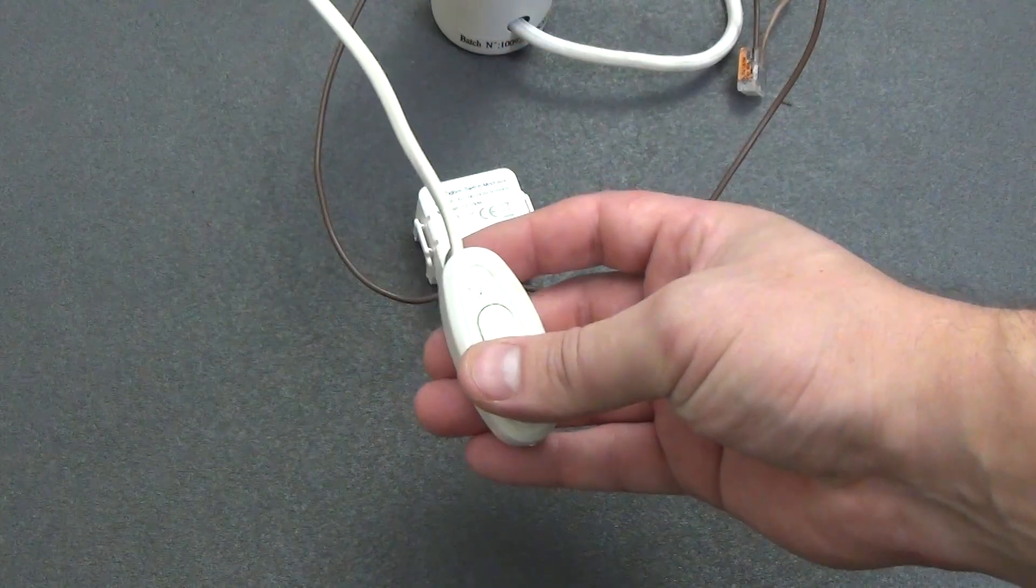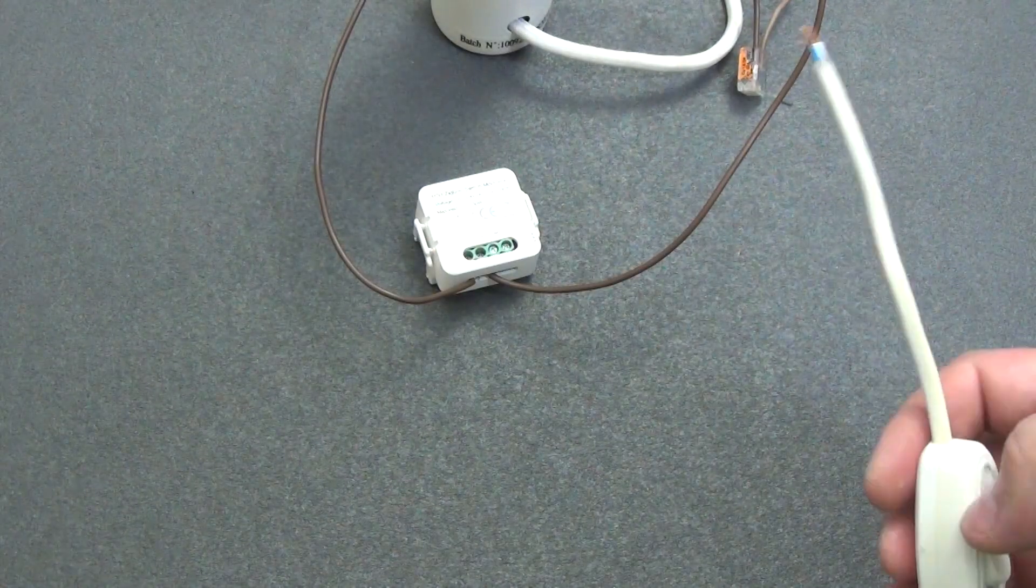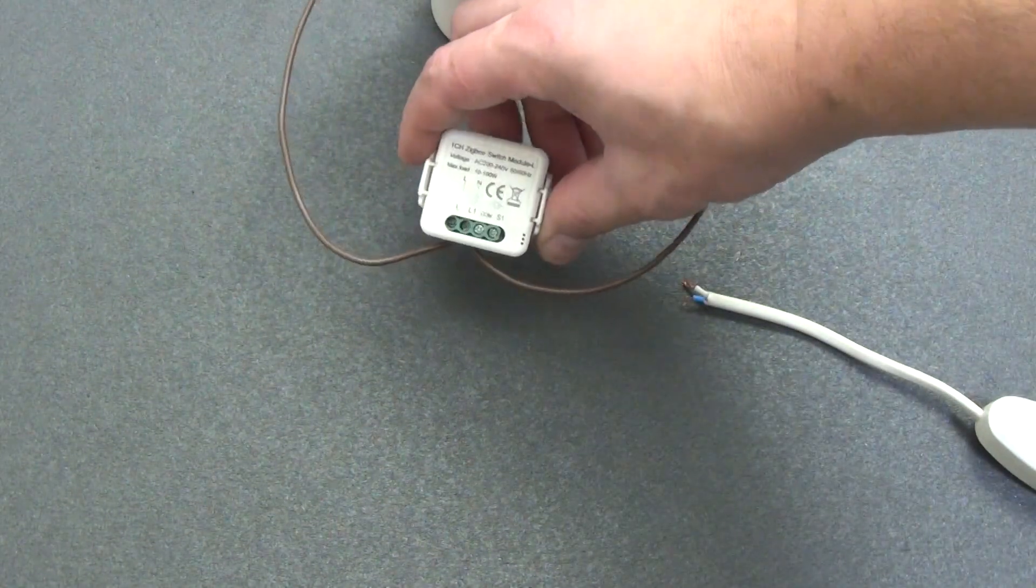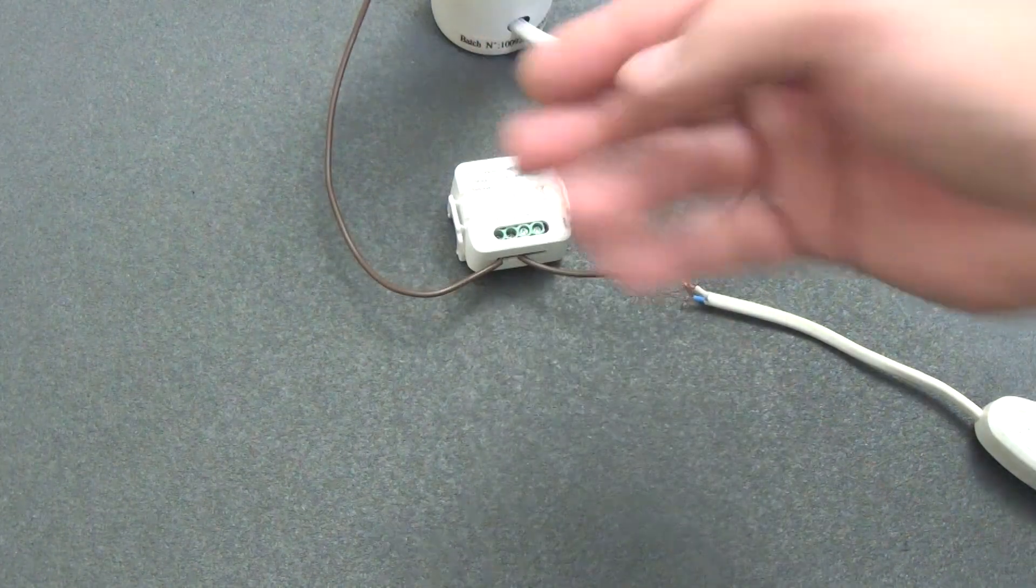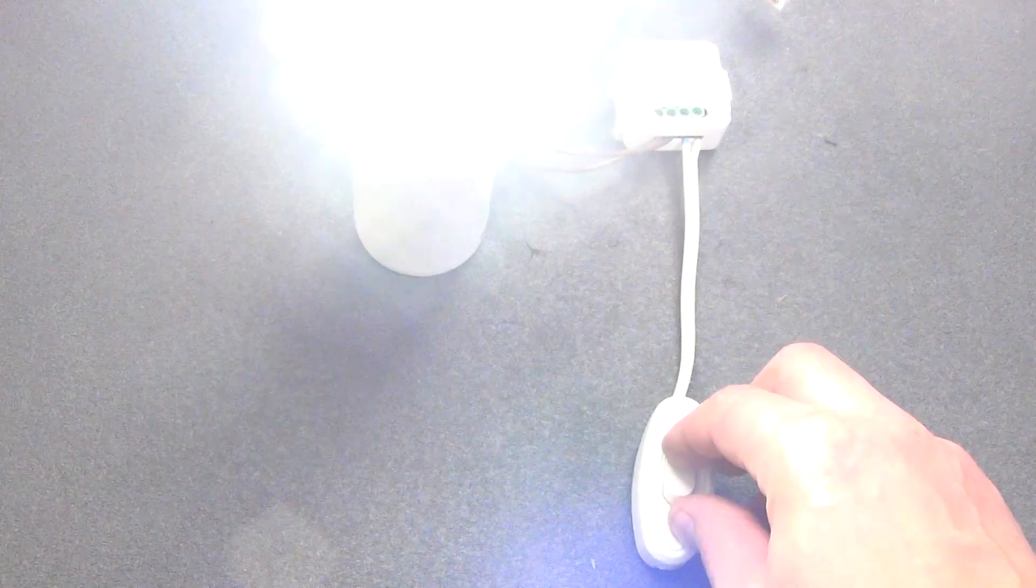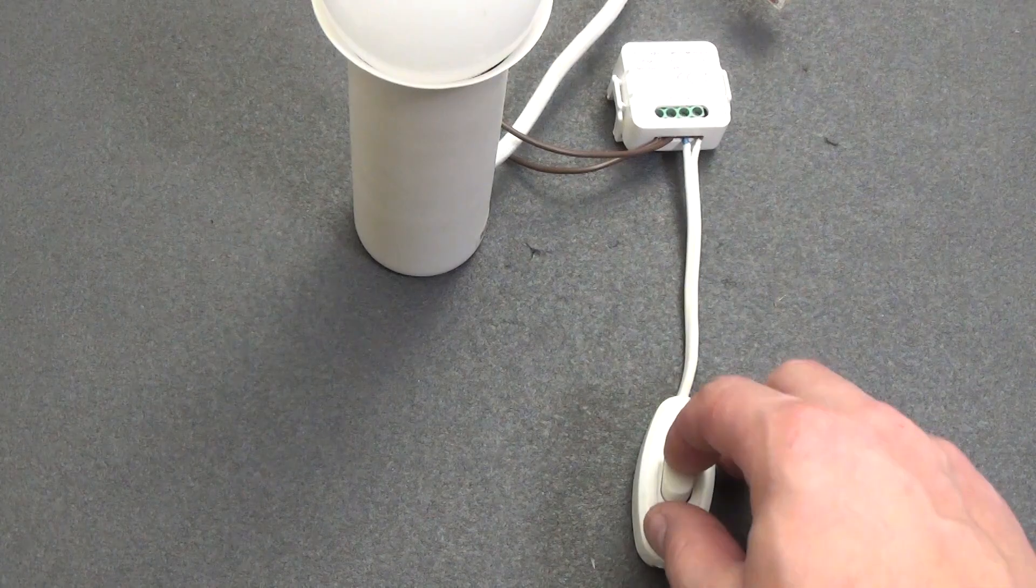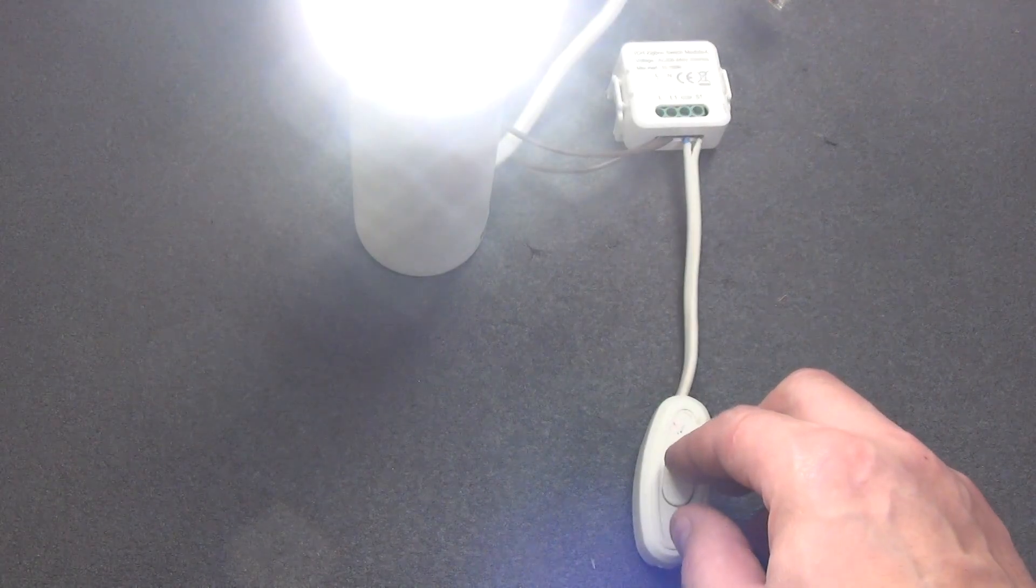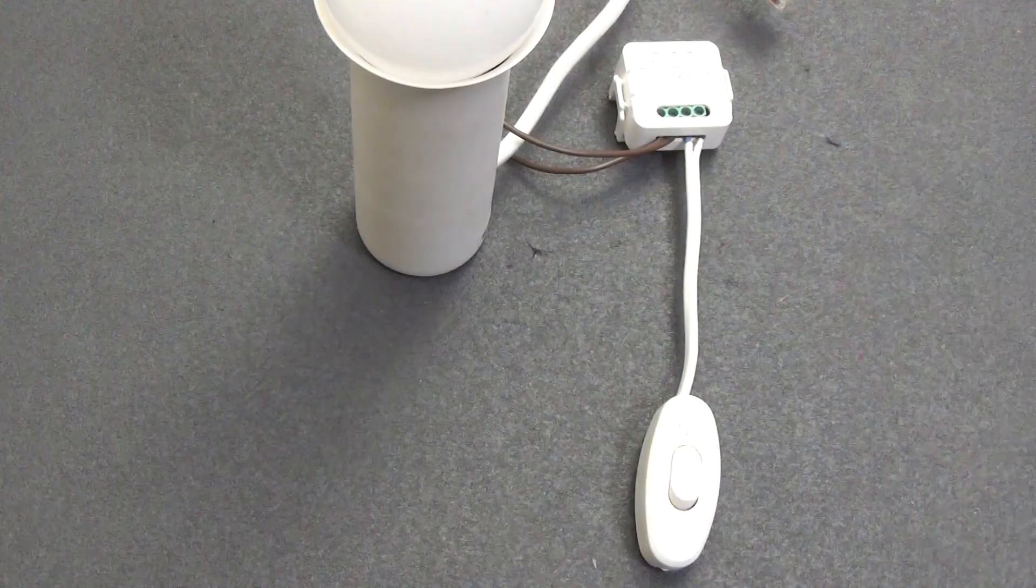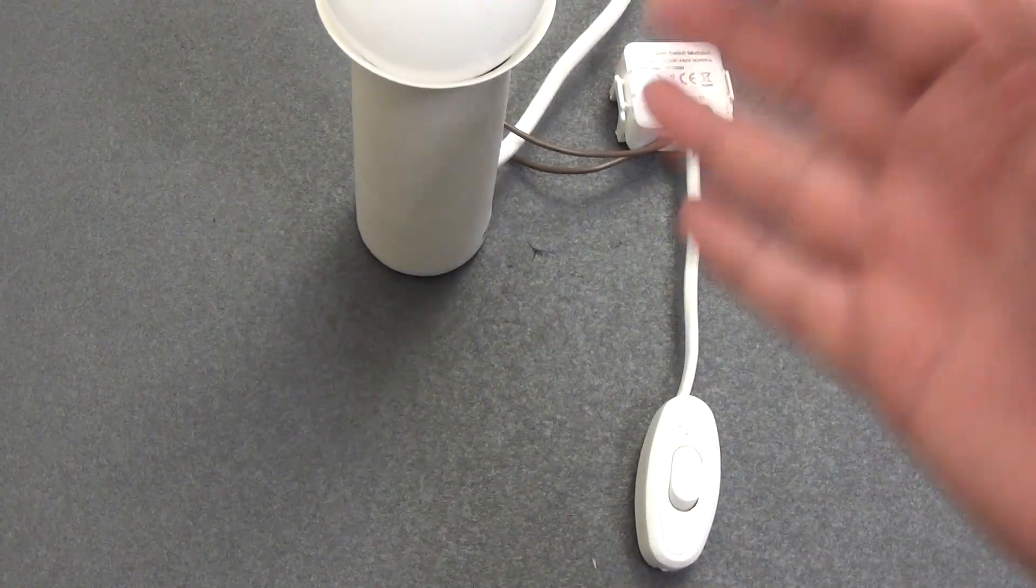But a question arises: what to do with the switch, since we have kind of excluded it from the circuit? It's simple. The relay has special contacts COM and S1. If you short them, the relay changes the state of the load. That is, now our switch simply performs the role of a button. You only need two short wires from the switch to these contacts of the relay, and everything works as usual again. Turned it on, it lit up. Turned it off, it went out. This is what the basic operation of the relay looks like; we have already covered this in previous reviews.